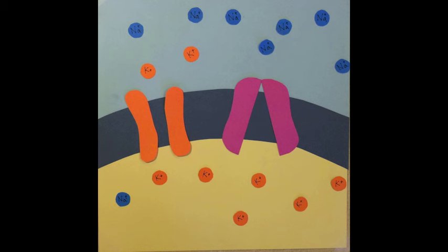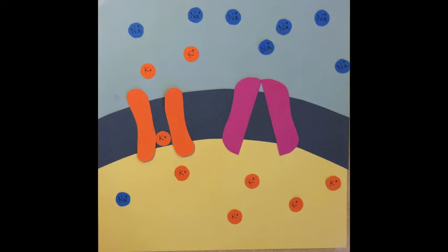The cycle continues when three more sodium ions bind to the channel along with another molecule of ATP. Many potassium leakage channels are located throughout the cell membrane.